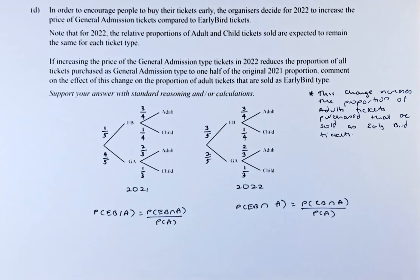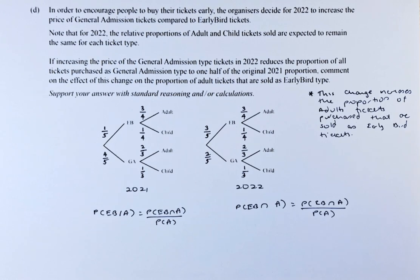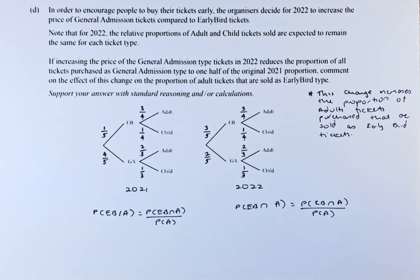In order to encourage people to buy their tickets early, the organiser decides for 2022 to increase the price of general admission tickets compared to early bird tickets. Note that for 2022, the relative proportion of adult and child tickets sold are expected to remain the same for each ticket type.